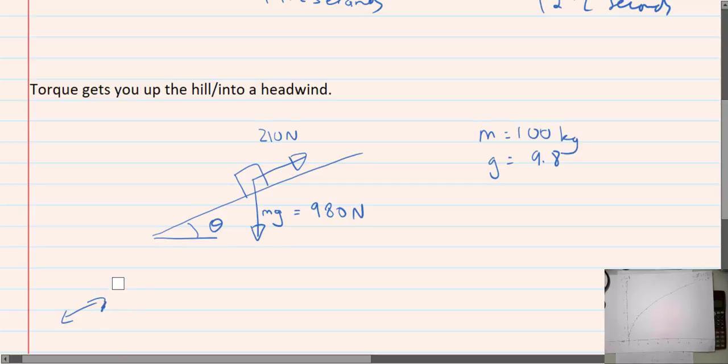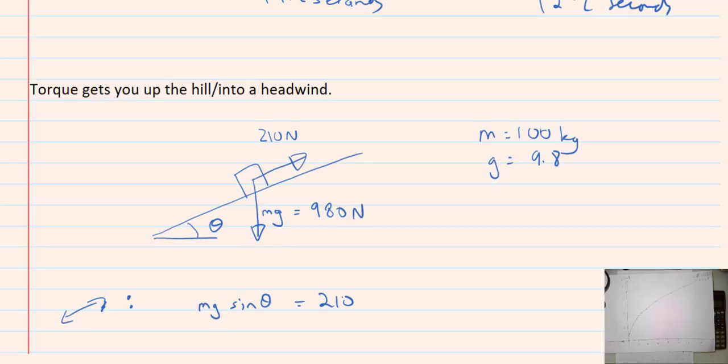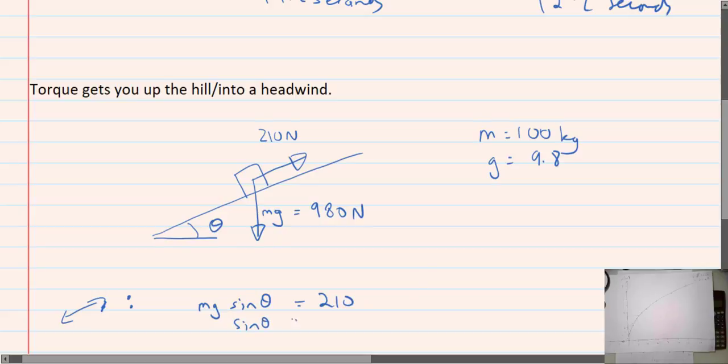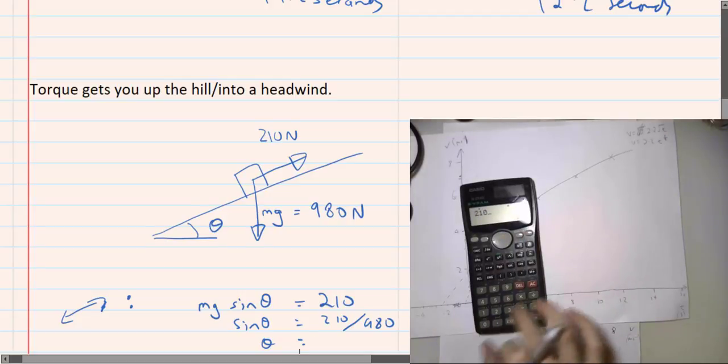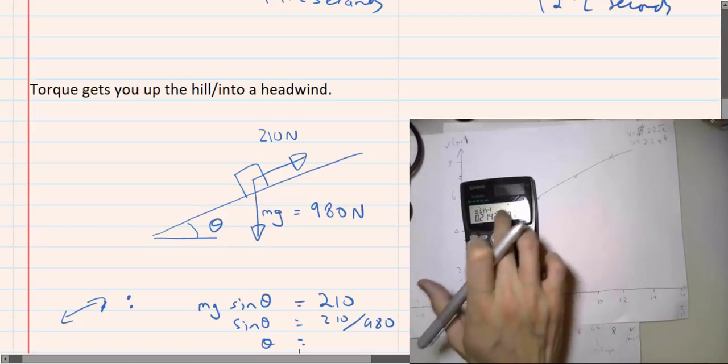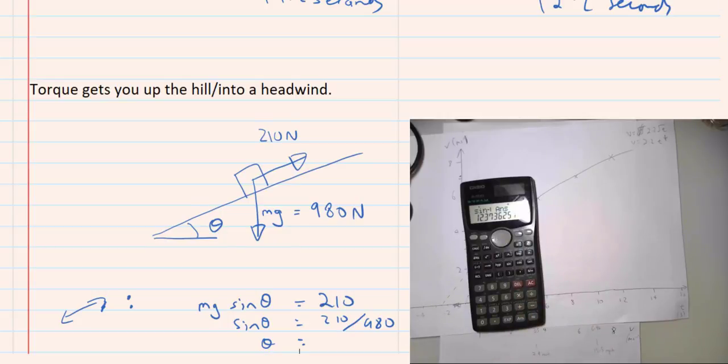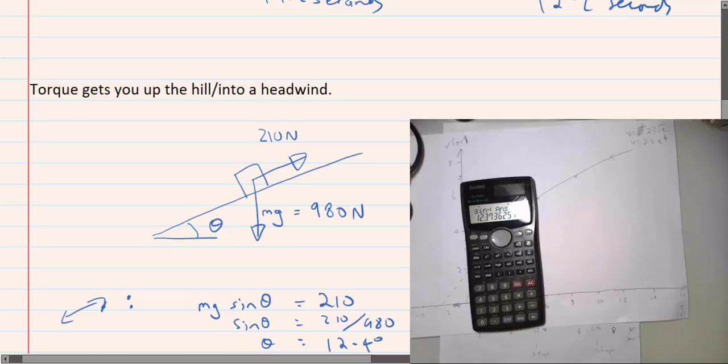So let's resolve forces. mg sine theta equals 210. Now, if you're not familiar with how to get to this stage, don't worry about it too much. You could draw a triangle and use ratio of lengths. For now, just trust me on this. Okay, so sine theta would be 210 divided by 980. So theta, get the calculator out, 210 divided by 980. Shift sine, make sure I'm in degrees.